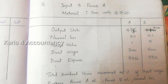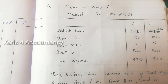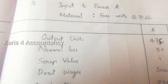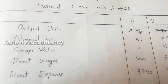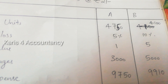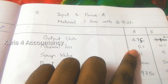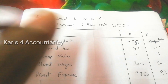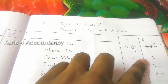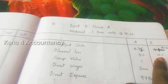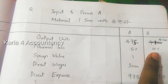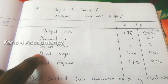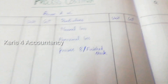This is the problem. Input to Process A: Material — 10,000 units at the rate of Rs. 2. Output units for Process A and B: 4,750 and 4,100. Normal Loss is 5% for Process A and 10% for Process B. Scrap value is given. Input to Process B — we have the problem data with scrap values noted.